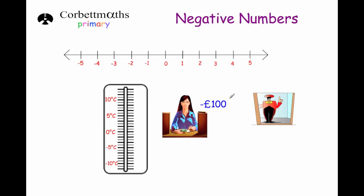Negative numbers — you may have encountered them in a money situation, such as bank accounts whenever they become overdrawn. For instance, if someone had £50 in the bank and they spent £150 on a television, their bank account would then go to minus 100 — in other words, they owed the bank £100. You may have also seen negative numbers in lifts, so basement floors: minus one, minus two, minus three, and so on. There are loads of different situations where you may have encountered negative numbers.